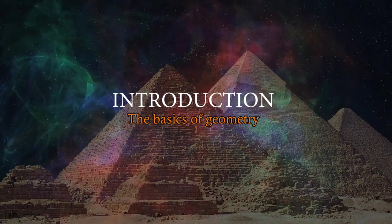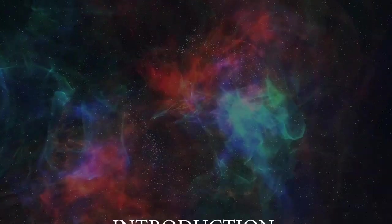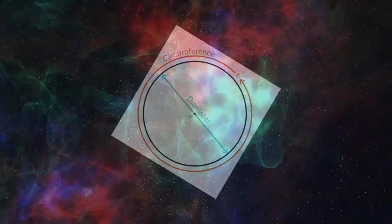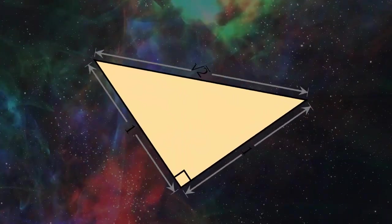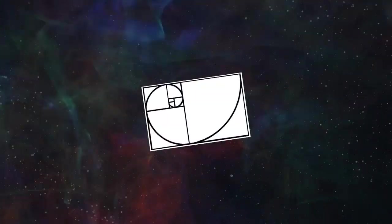In geometry there are a few very essential constants, such as pi, the square root of 2, and phi or the golden ratio, which we will talk a lot about in this video.